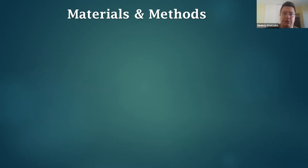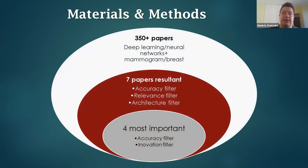Now, in this review, what we did was search through the archive database of papers with the keywords deep learning and neural networks, along with the keywords mammogram and breast. And this resulted in more than 350 papers. Of these papers, due to some accuracy filter, which was accuracy below 80% and the area under the curve below 85%, all those papers were dropped.